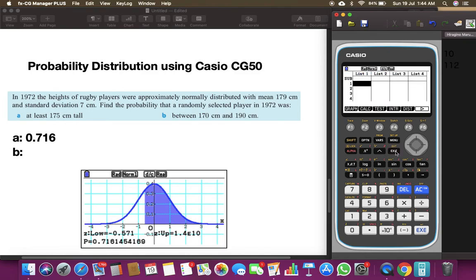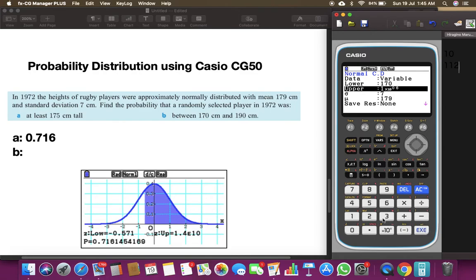Similarly, if we solve part 2, like between 170 and 190 centimeters, let's again go to distribution and normal distribution ncd. Here the lower value would be 170 and the upper value would be 190.